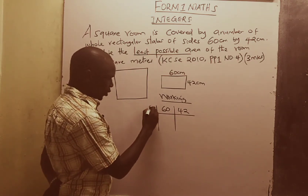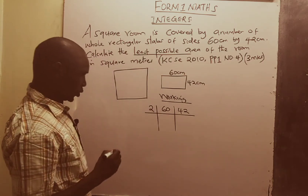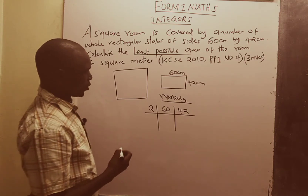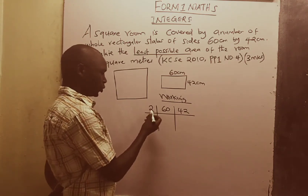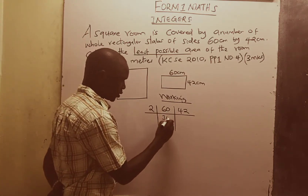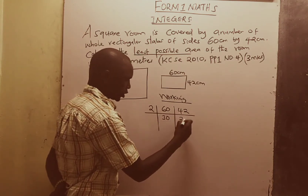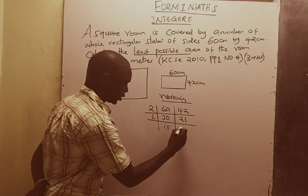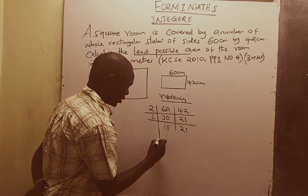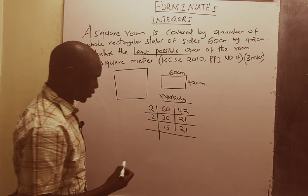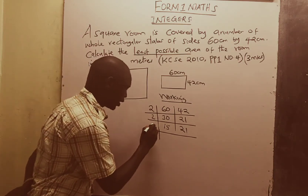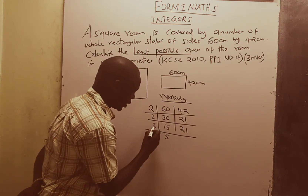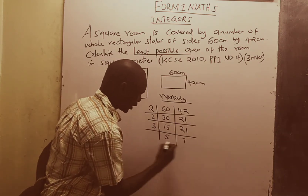We are going to start with 2, which is the least factor. For 60 and 42: 2 goes into 60 thirty times, and it divides 42 twenty-one times. 2 can divide 30 fifteen times, but it does not divide 21. Now 2 cannot divide 15 and 21, therefore we use 3. 3 divides 15 five times, and it divides 21 seven times.